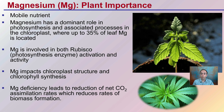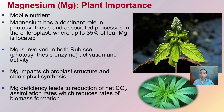Magnesium is involved with the Rubisco enzyme activation activity, and that is very important to initiate that carbon binding with the photosynthetic process. The magnesium impacts chloroplast structure and synthesis on a micro level, but we can see macro effects in the plant. The deficiency leads to a reduction in the plant's ability to utilize carbon dioxide, reduced assimilation rates and rates of biomass formation, which can reduce yield — both negative aspects that growers want to avoid.